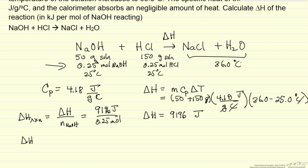So that means delta H reaction per mole is 36,784 joules per mole of sodium hydroxide. I'll write it 36.8 kilojoules per mole. So here's the heat of the reaction for this neutralization reaction.